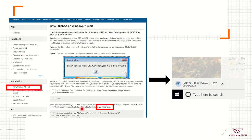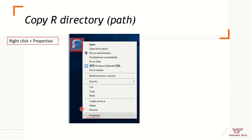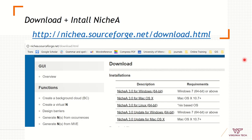Install R and install the different R packages needed to run analyses and display data. Copy the directory path to R — this is an example of the path used to run R directly from NicheA. Save that path, then download and install NicheA according to the Windows version or operating system you have.